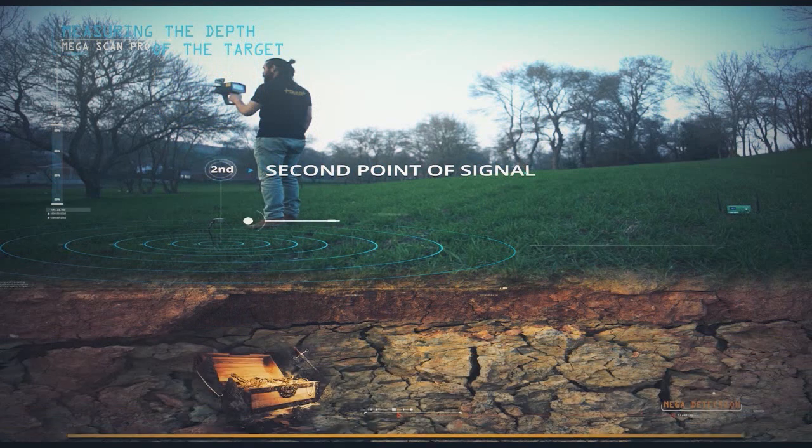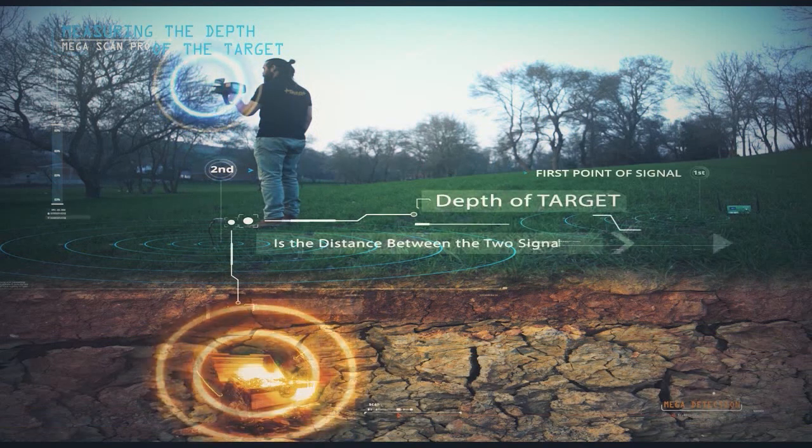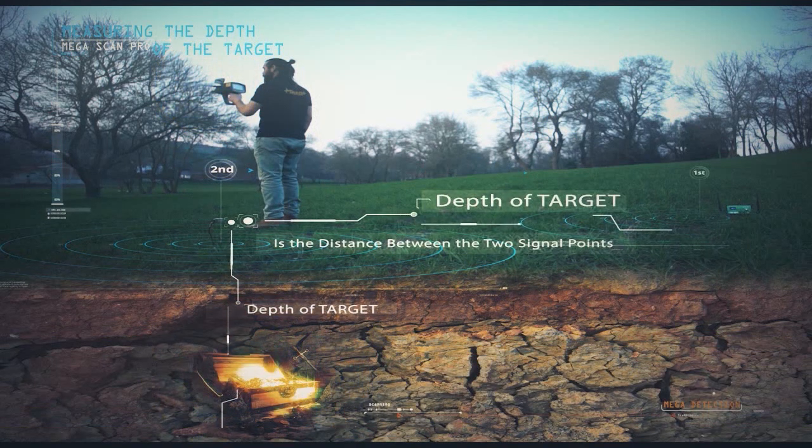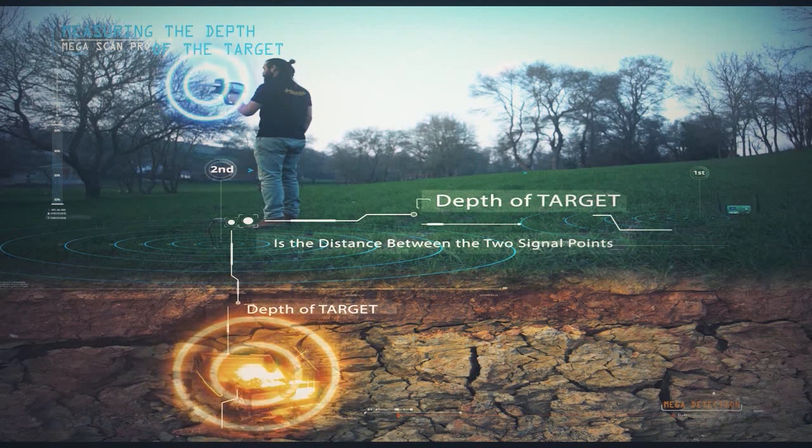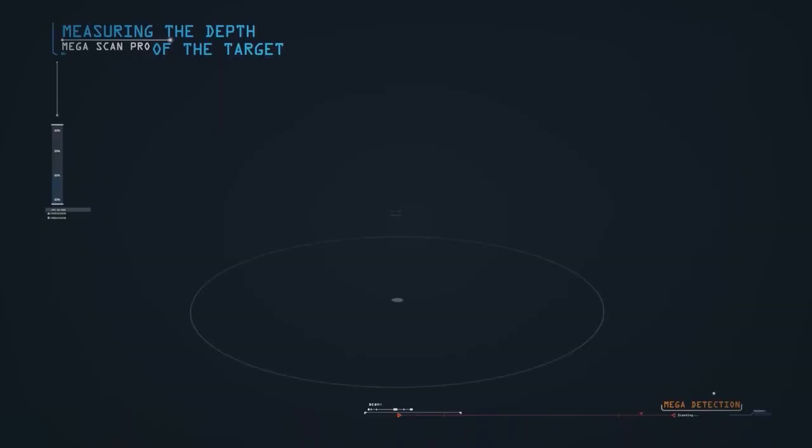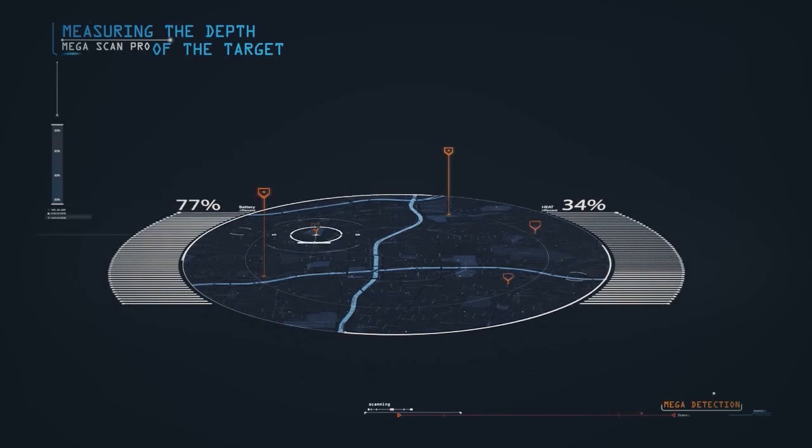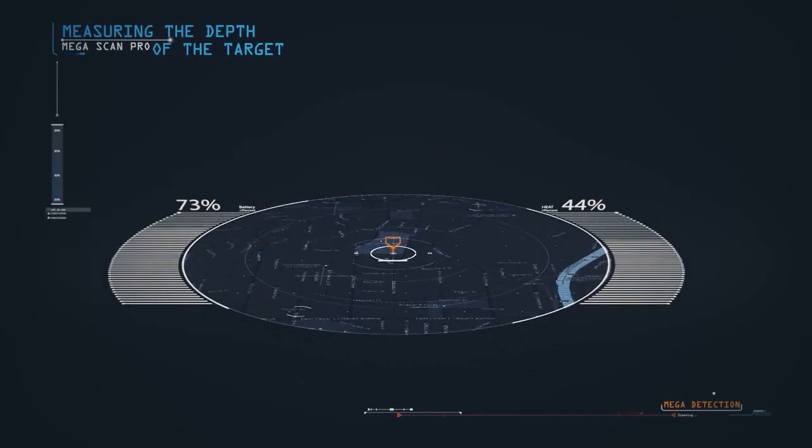The approximate depth of the target is the distance between the two signal points, with the slope of 45 degrees from the second point. Several depth measurements are required from various other signal points to measure depth more accurately.